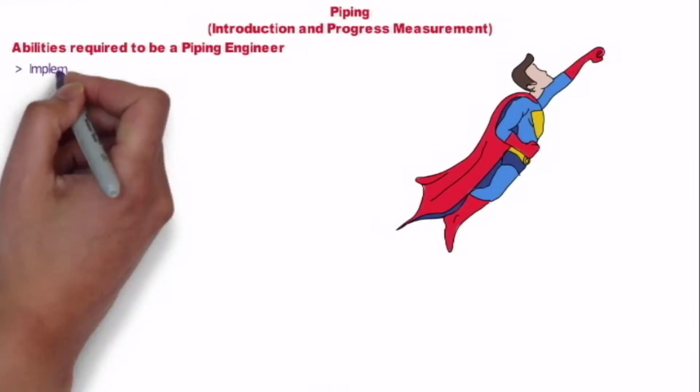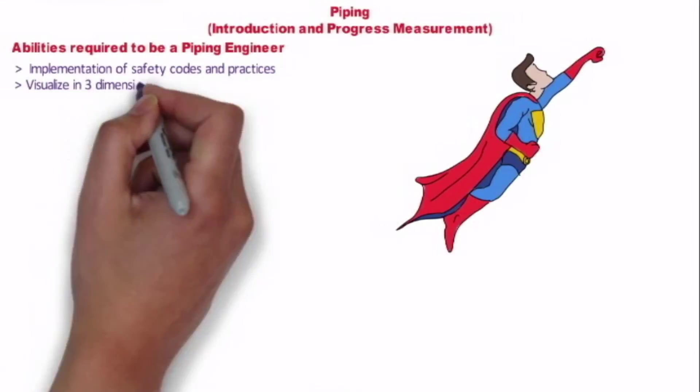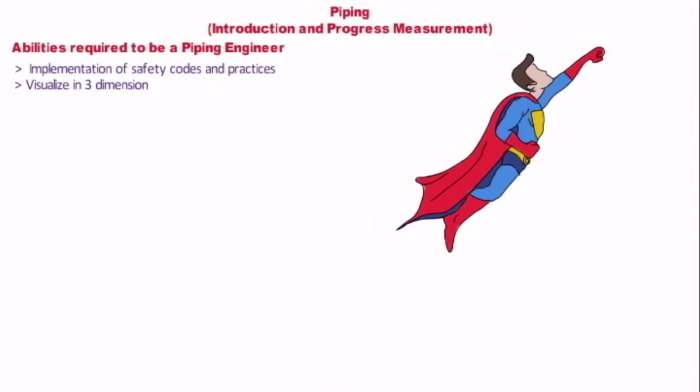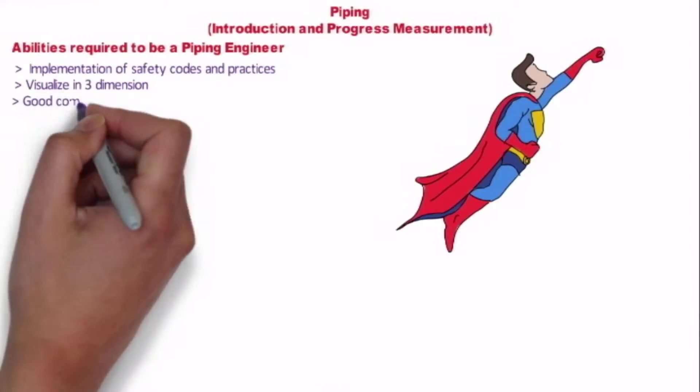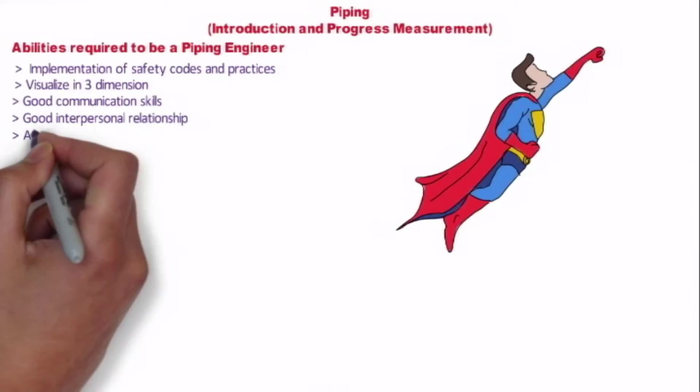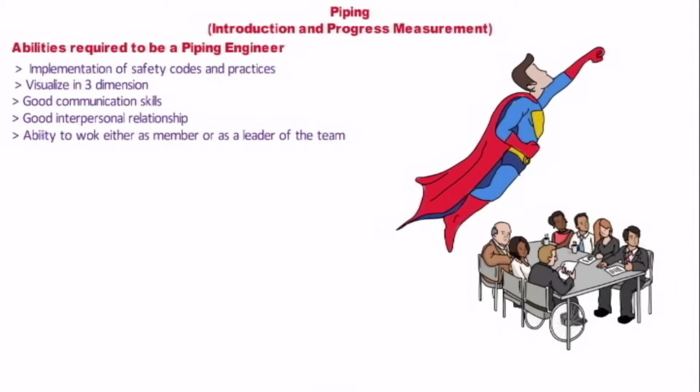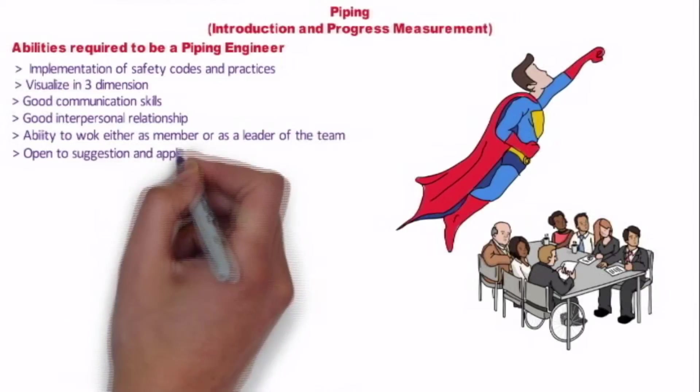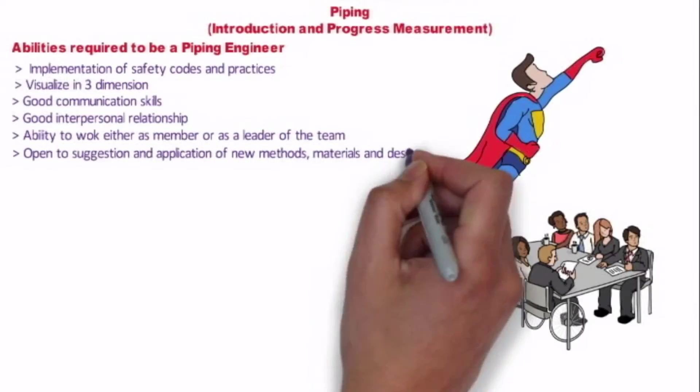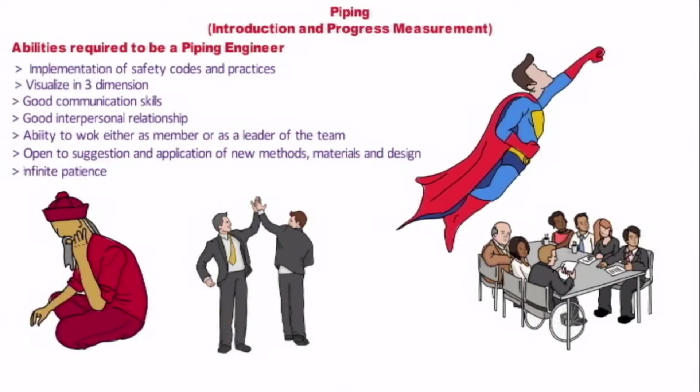Let's see what are the abilities required to be a piping engineer. Needless to say that a true understanding of knowledge of safety codes and practice is must for anyone involved in chemical process plant design and engineering. It has to visualize in 3D to visualize piping scheme in various alternative methods and choose the most appropriate one is the basic to good piping engineering practice. Piping engineering being a team effort, good communication skill, good interpersonal relationship, ability to work either as a team member or as a leader of the team, to be open to suggestion and application of new method, new material and new design are important qualities that enable one to deliver quality work. And infinite patience are the hallmark of the good piping engineer as there are many times so many changes are coming in the design.